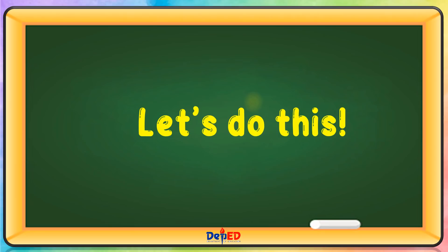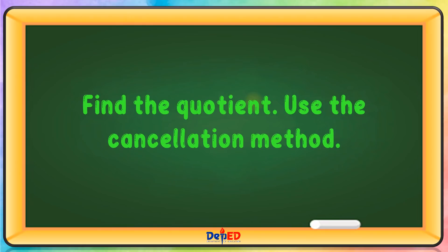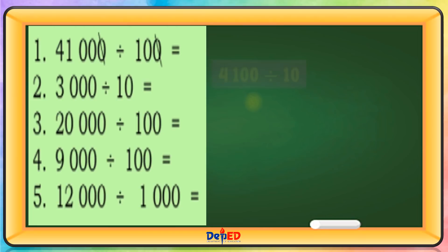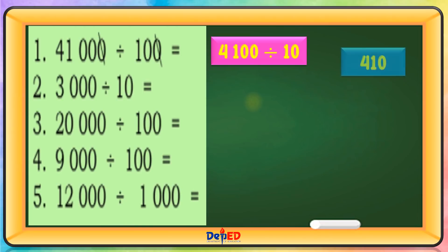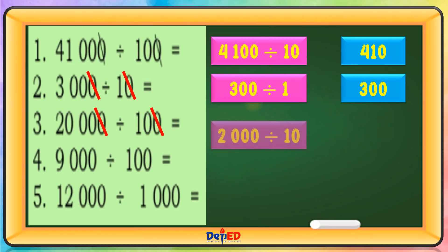Let's do this. Find the quotient using the cancellation method. Number 1: Let's cancel first. 4,100 divided by 10 equals 410. Number 2: Let's cancel first. It will become 300 divided by 1 equals 300. Let's cancel first. It will become 2,000 divided by 10 equals 200.